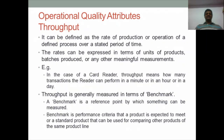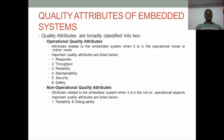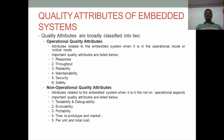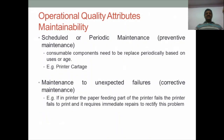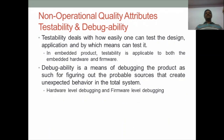To summarize operational quality attributes: response, throughput, reliability, maintainability, security, and safety. Now moving to non-operational quality attributes: testability, debuggability, evaluability, portability, time to market, per-unit cost, and total cost. Starting with testability and debugging ability.